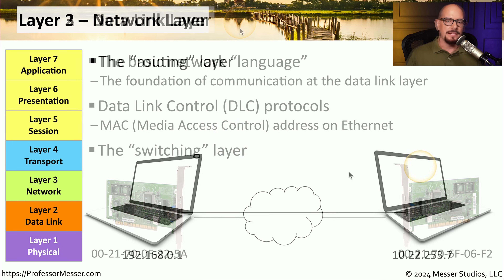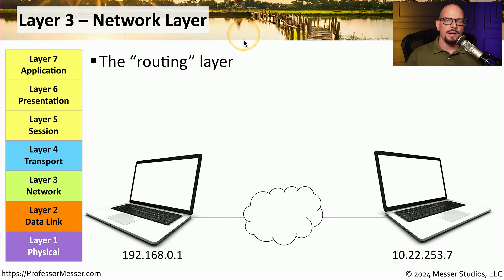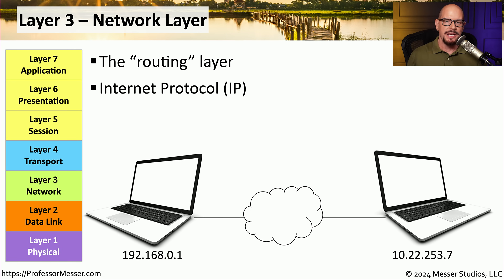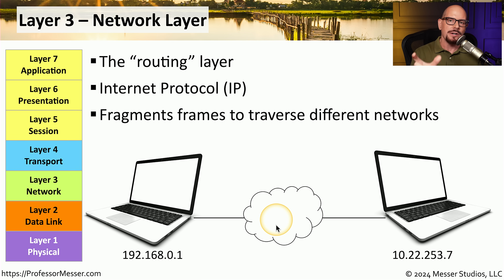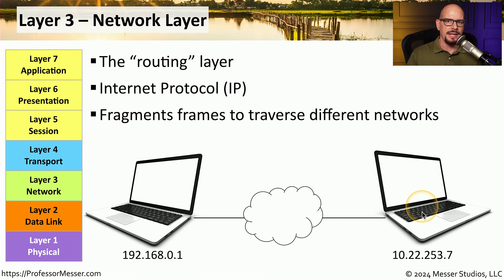The next layer is OSI layer 3, the network layer — often called the routing layer, because routers use it to determine how to forward traffic by looking at the destination IP address. Layer 3 also allows fragmentation of frames into smaller pieces to traverse networks with smaller frame requirements, then reassemble them on the other side. Any issue with IP addressing, subnet masks, or routing is a layer 3 problem.